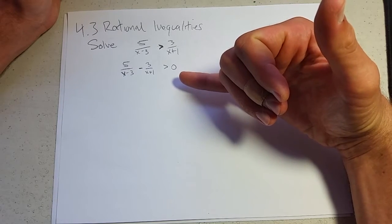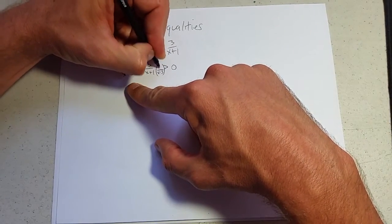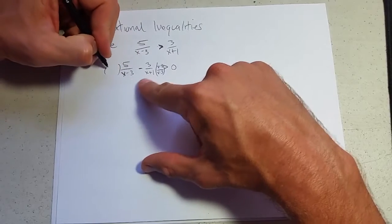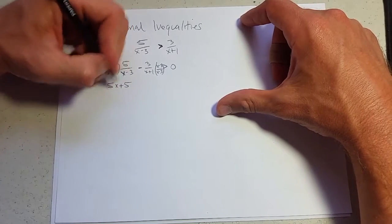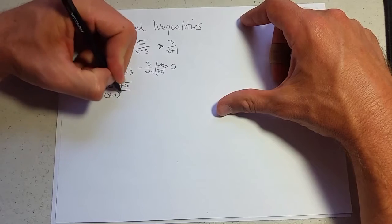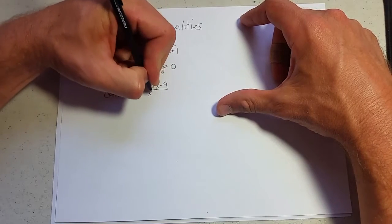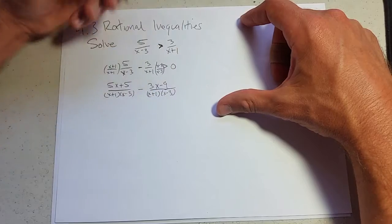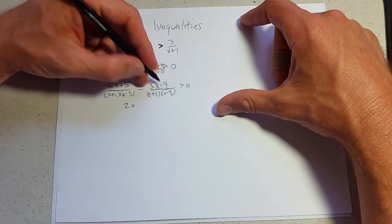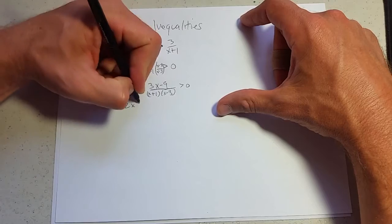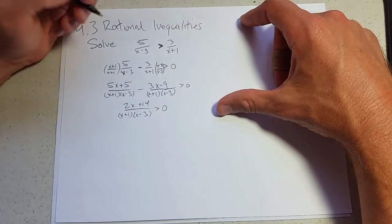How do I subtract? You need common denominator. So there's nothing in common. So I need to multiply this fraction by x minus 3 divided by x minus 3. Multiply this fraction by x plus 1 over x plus 1. So if we're going to multiply, we have 5x plus 5 divided by x plus 1 times x minus 3. Minus 3x minus 9 divided by x plus 1 times x minus 3. So 5x minus 3x is 2x. 5 minus a negative 9, 5 plus 9 is 14.